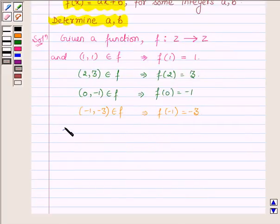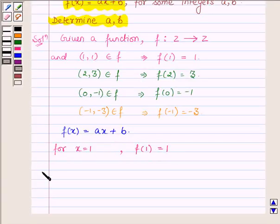Now f(x) is a function which is defined by ax + b. Now for x = 1, f(1) = 1. This implies a(1) + b = 1, which further implies a + b = 1. Let this be equation number 1.